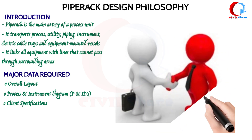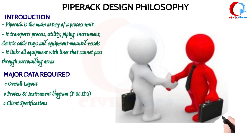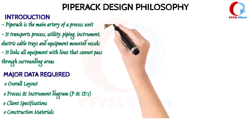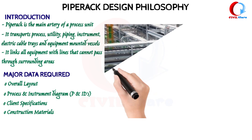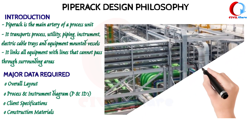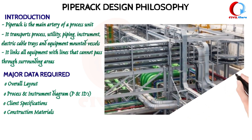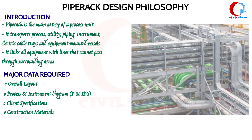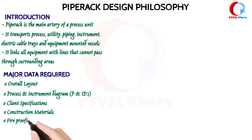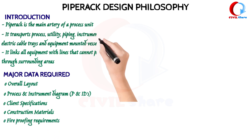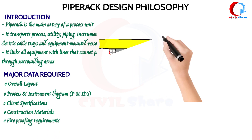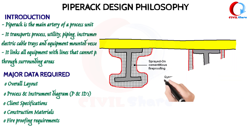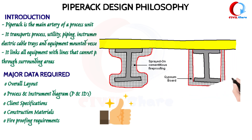Construction Materials: the main materials used to construct a Pipe Rack are structural steels and other process, instrument, and piping related materials. Fire Proofing Requirements: Fire Proofing, a passive fire protection measure, refers to the act of making materials or structures more resistant to fire.